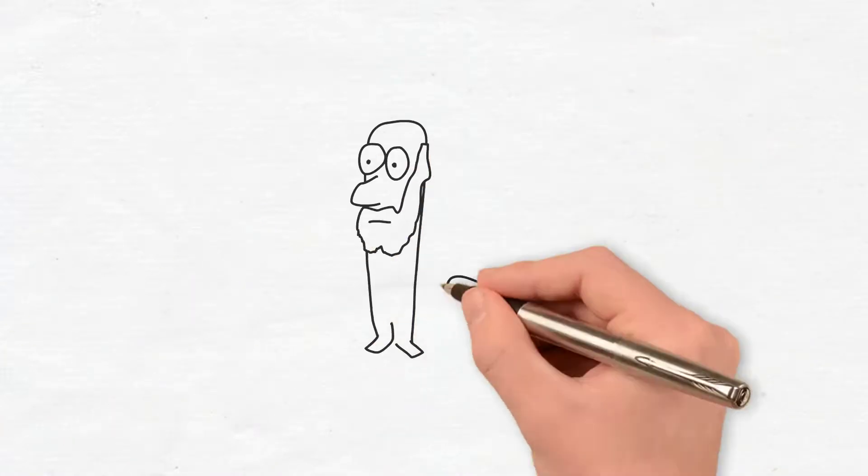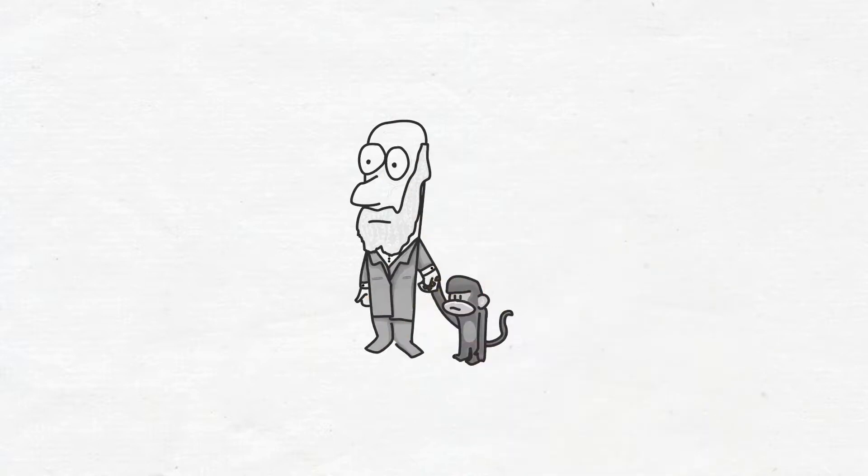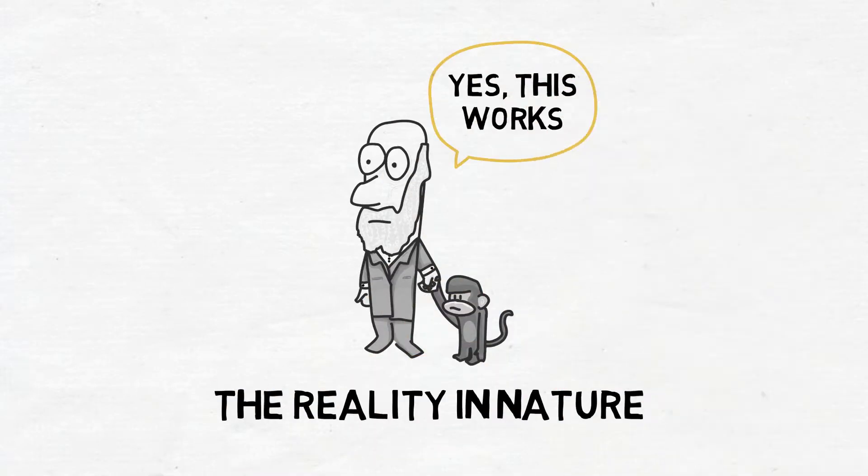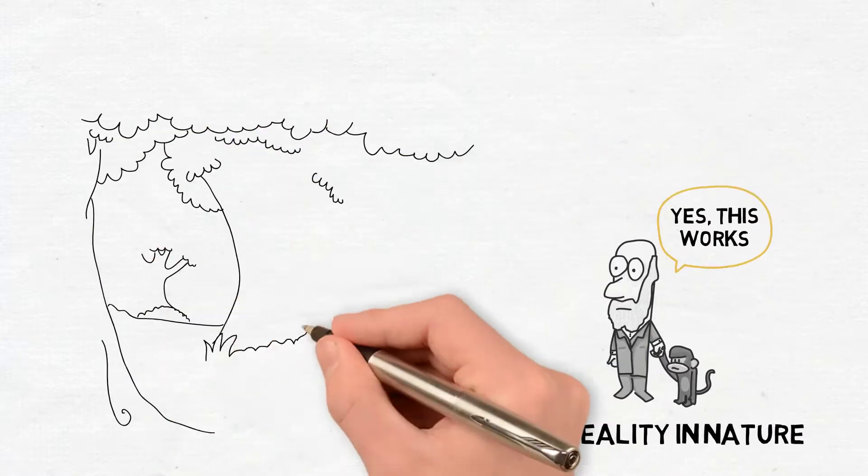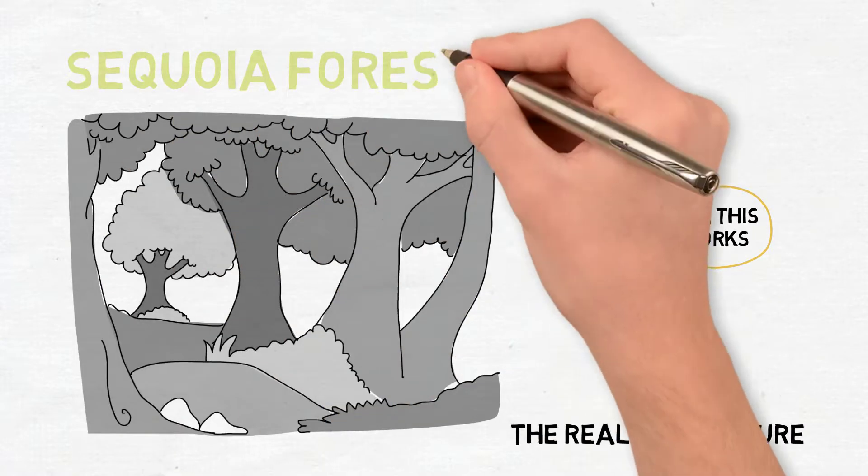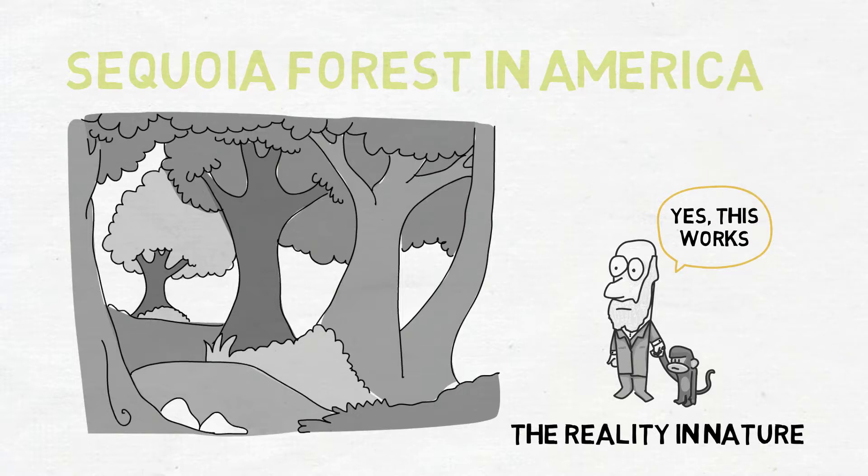And so, these are the case studies, the evidence, the reality in nature. Yes, this works. But we don't have to really do the experiments. We can go to the Sequoia Forest in America, and they're getting up to 80% of their moisture from mists and fog harvested from the marine air flows.